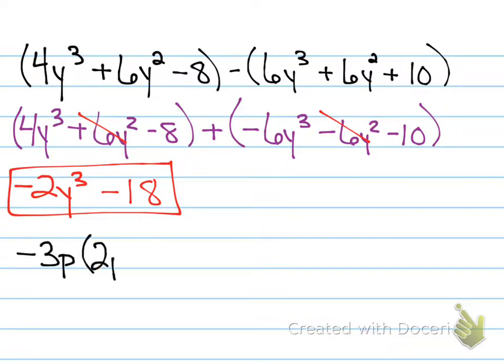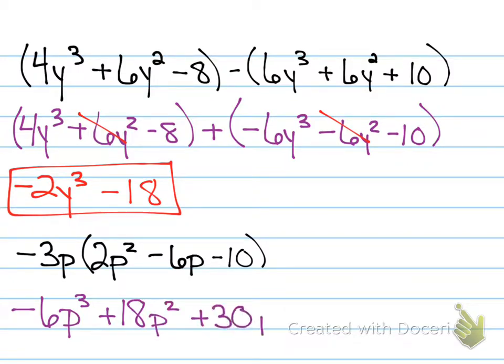Alright, now, I want you to do a multiplication. Monomial and polynomial multiplied together. Okay, so negative 3p times 2p squared. Now that I'm multiplying terms together, what do I do to their exponents? I add the exponents together with multiplication. So, I get negative 6p to the third plus 18p squared plus 30p.